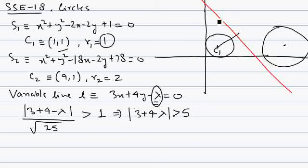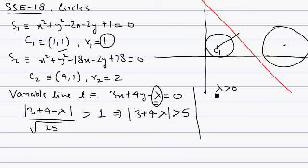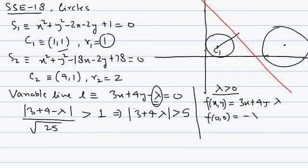Because of the modulus there are two cases, since the line is variable. The line can be on either side. We make Case 1: lambda greater than 0. If lambda is positive, the sign of the origin with respect to the given line 3x + 4y − lambda, when we replace (0,0), gives −lambda, which is negative. So the position of origin with respect to this line is negative. We want origin and C1 to be on the same side of the line.